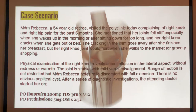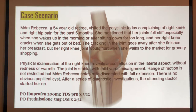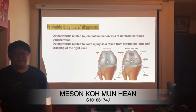Physical examination of the right knee reveals a cool effusion in the lateral aspect without redness or warmth. The joint is stable with mild varus misalignment. Range of motion is not restricted but Madam Rebecca notes mild discomfort with full extension. There is no obvious popliteal cysts. After a series of diagnostic investigations, the attending doctor started her on PO ibuprofen 200mg TDS and PO prednisolone 5mg OM. I will be talking about the probable diagnosis.